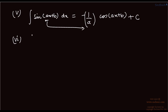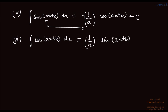For cos(ax + b) dx, the integral is 1/a times sin(ax + b). There can be many variations using different values of a and b. The key point: whenever we get cosine as the answer from integrating sine, we put a negative sign. This negative sign is important.